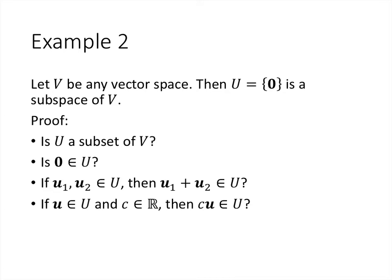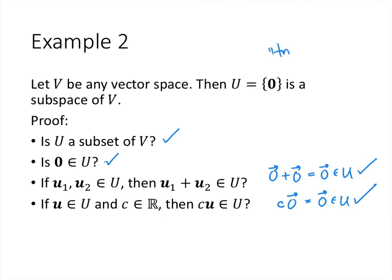Here's another example. If capital V is any vector space, the set U containing just the zero vector is also a subspace — a very small one. It's a subset since its only element is in V. The zero vector is in U since it's the only element. If we take two elements of U and add them, the only option is zero plus zero, which gives the zero vector, still in U. And multiplying the zero vector by any scalar just gives the zero vector. We call this the trivial subspace.